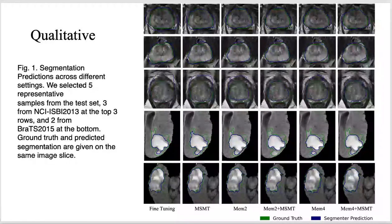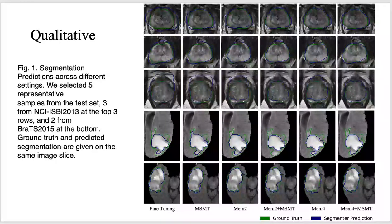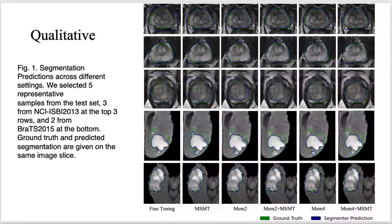We also provided qualitative evaluation to compare segmentation predictions across different settings. For samples from the NCI dataset, we see consistently that MSMT helped to generate more precise predictions regardless of whether rehearsal is involved in training. For the first and third sample, MSMT significantly mitigated over-segmentation. From the second sample, we see that MSMT could push the segmentation to align better with detailed structures along with the target boundary.